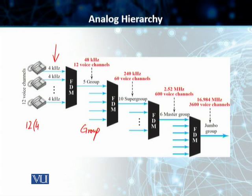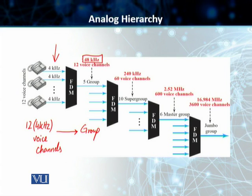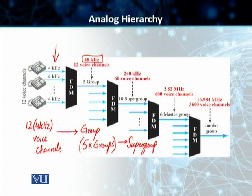We have got 12 4-kilohertz analog voice channels that we have combined to form a group. The bandwidth of this group is 48 kilohertz. We will then do the multiplexing again and we will combine 5 of these groups to form a supergroup. So we have 12 voice channels in a group, and we have got 60 voice channels in a supergroup.